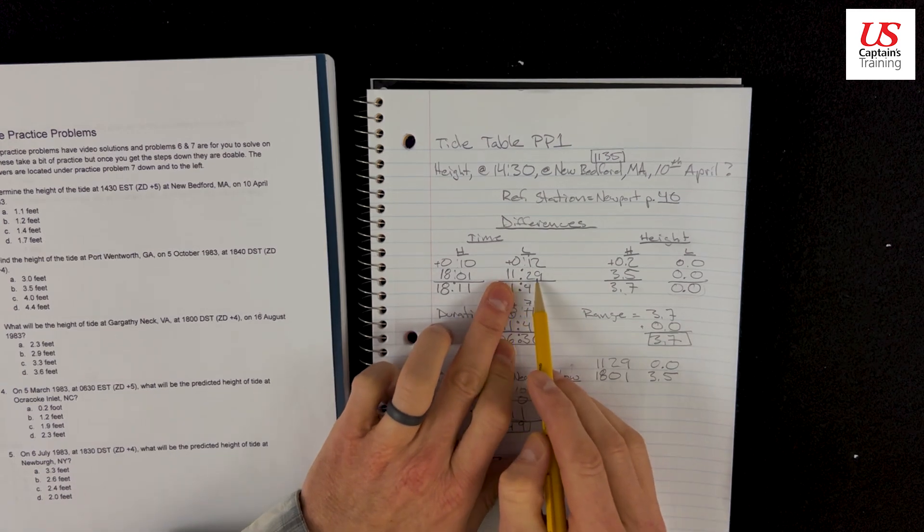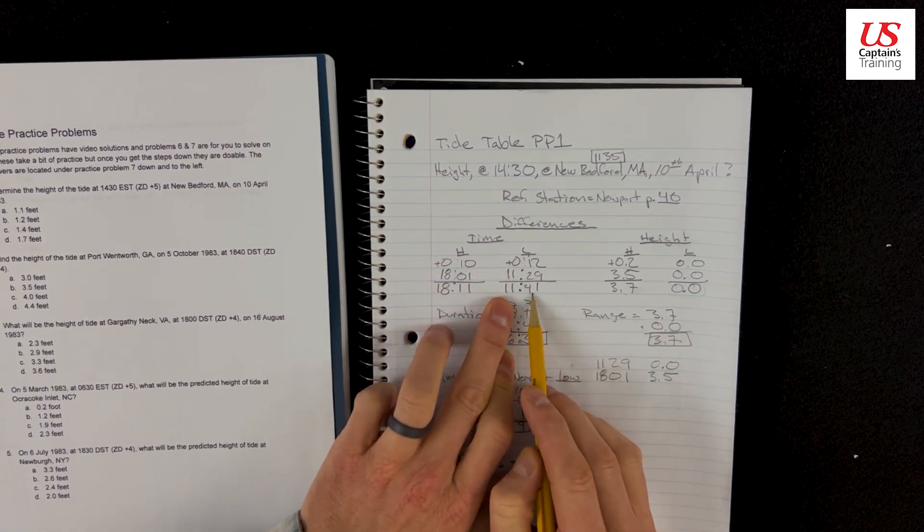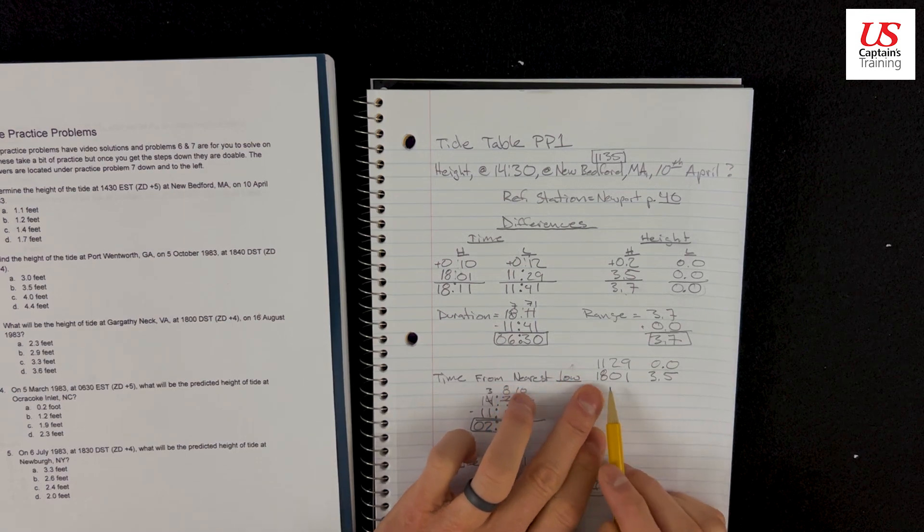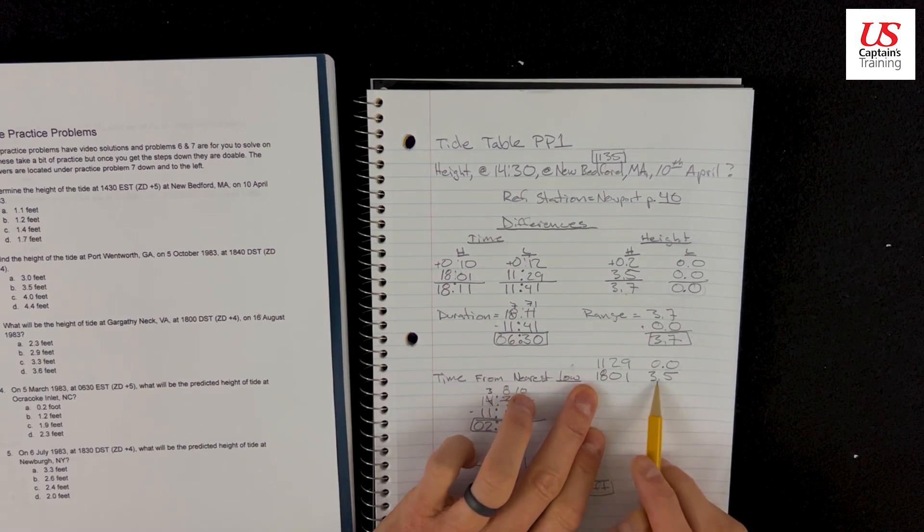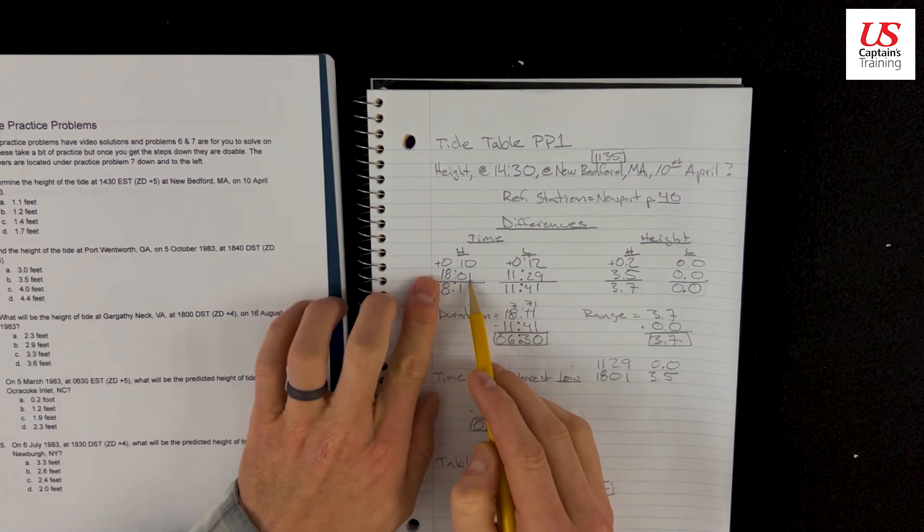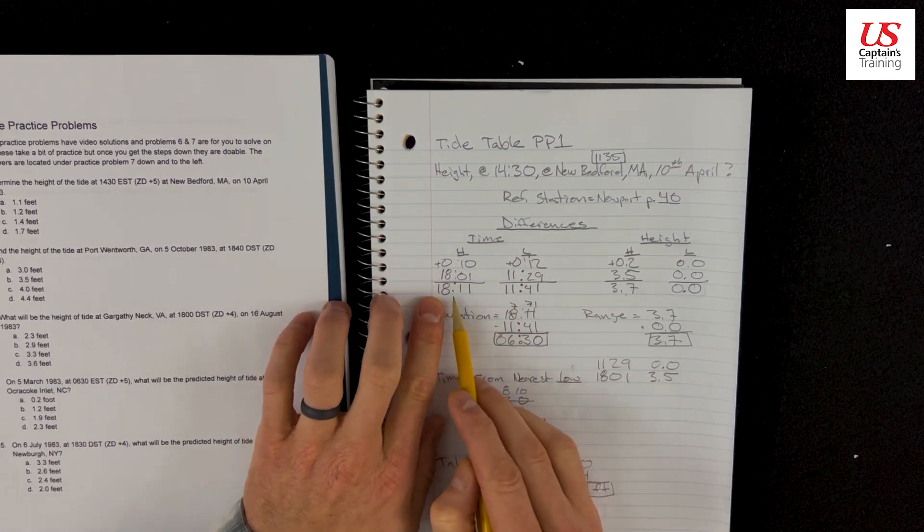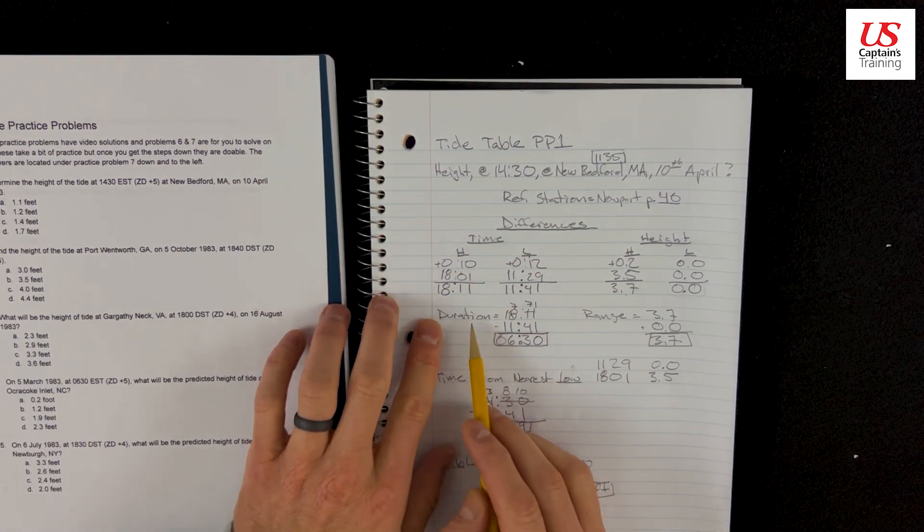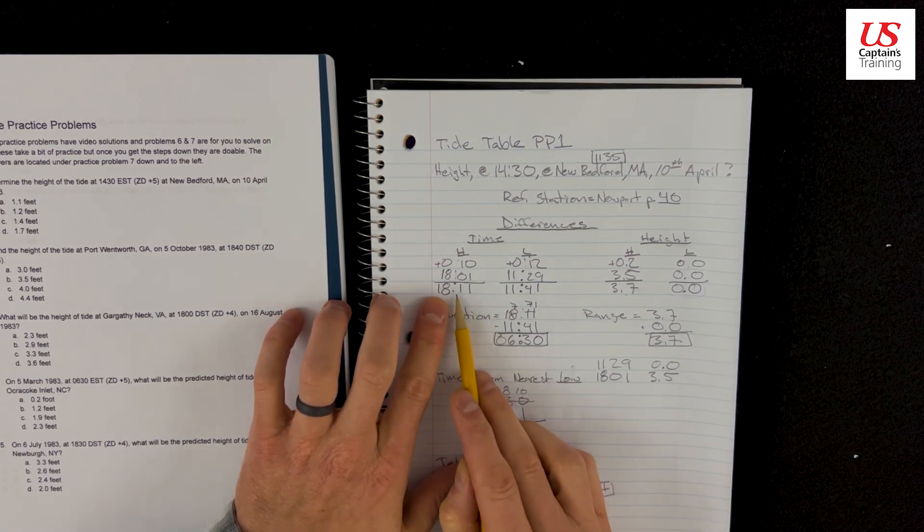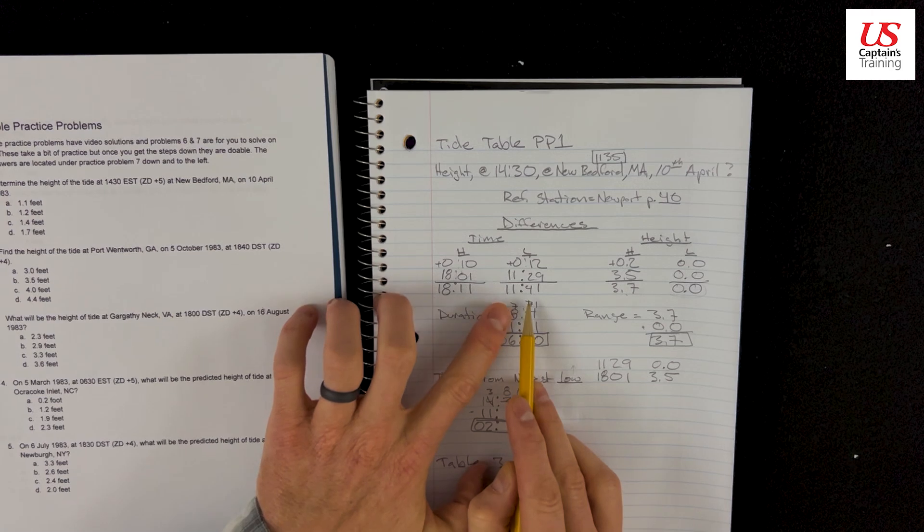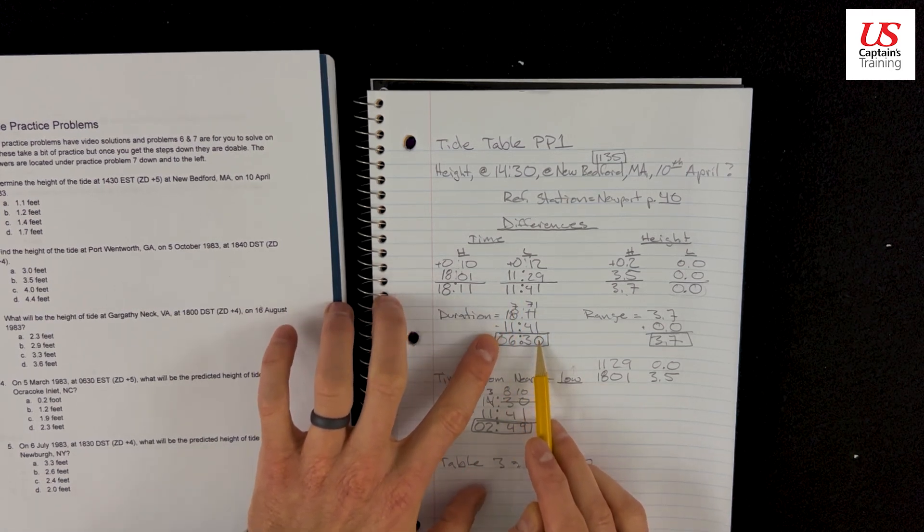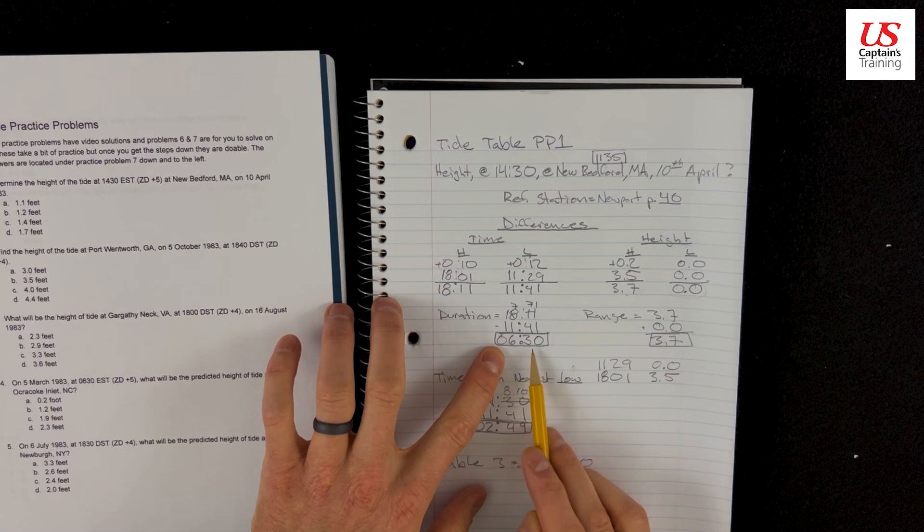And now we come over here and we take our 11:29, is a low, so we put it here, 11:29, and add the 12, we get 11:41. That's our time correction for the low. And our high, we can tell from this number, is 18:01. We put it here and correct it, and it's 18:11. And now, also to enter table 3, we need to find the duration of the tide. So we take the large time and subtract the small time. 18:11 minus 11:41 comes out to 6 hours and 30 minutes.